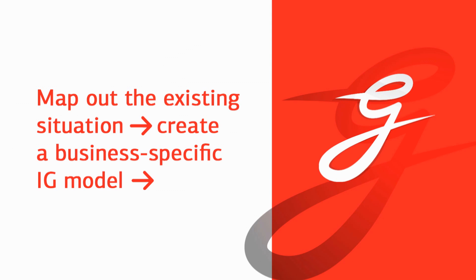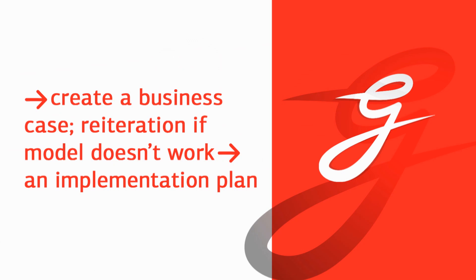The steps for creating it are actually quite simple. The first step is mapping out the existing situation and determining the maturity level of the organization. Then, based on that, creating an information governance model that's specific for that organization. The third step is creating a business case and then testing the model. And if the model doesn't work, then you need to reiterate it. The final step is creating an implementation plan.